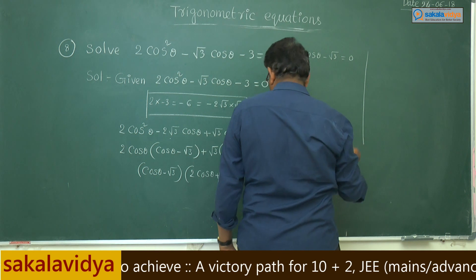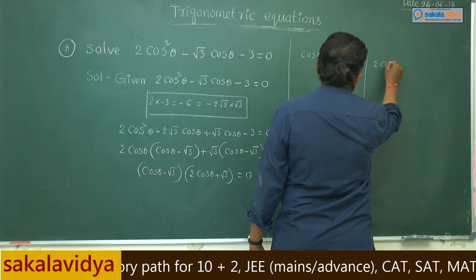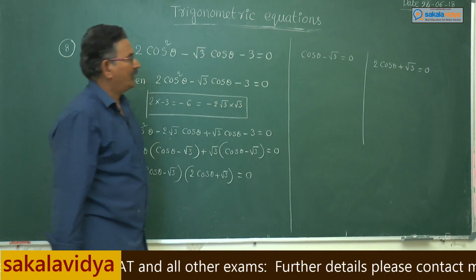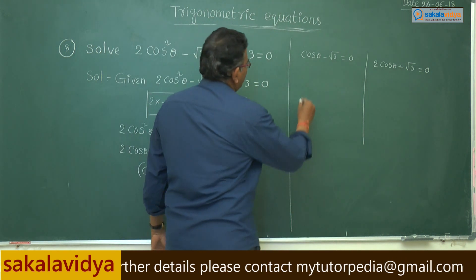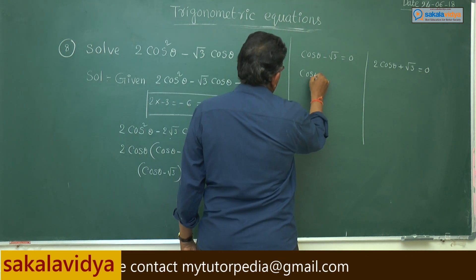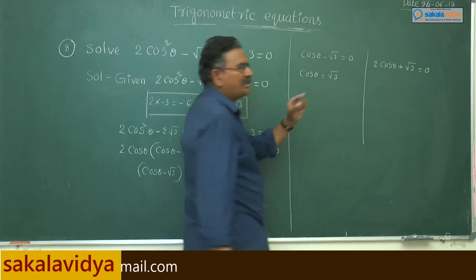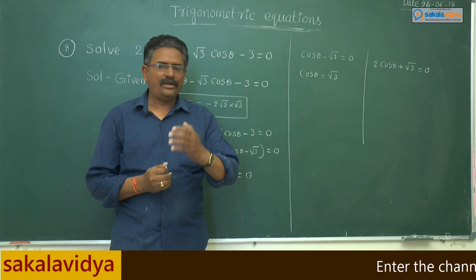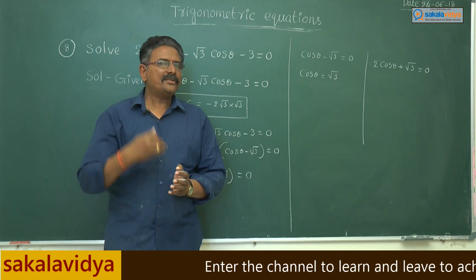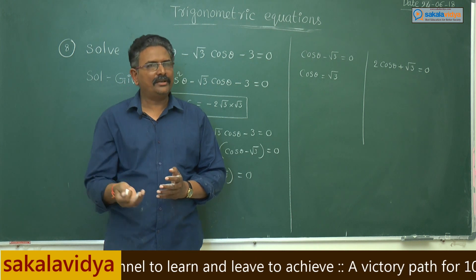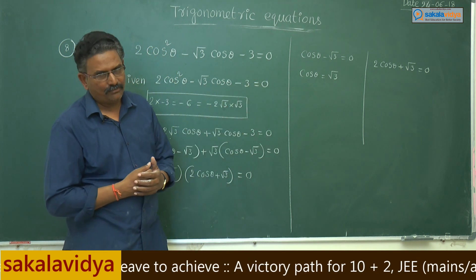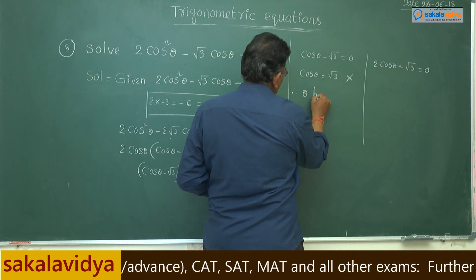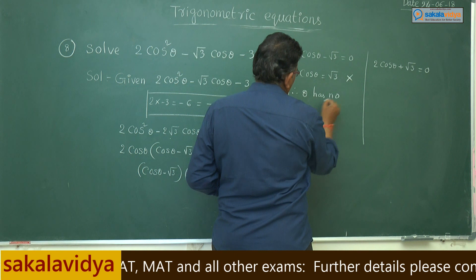Case 1: from cosθ - √3 = 0, we get cosθ = √3. However, cosθ must lie between -1 and 1 for all θ. Since √3 ≈ 1.732, which is greater than 1, this is not applicable. Therefore, this case has no solution.